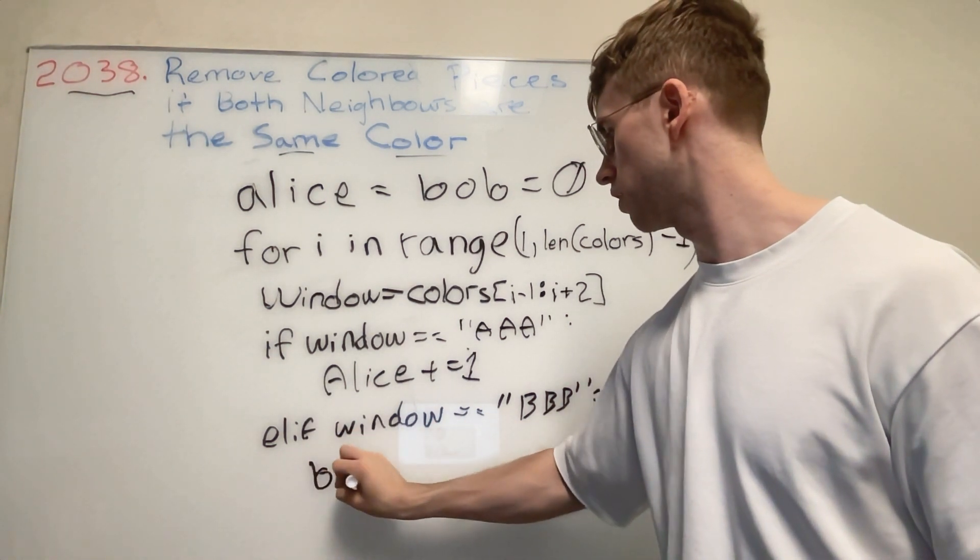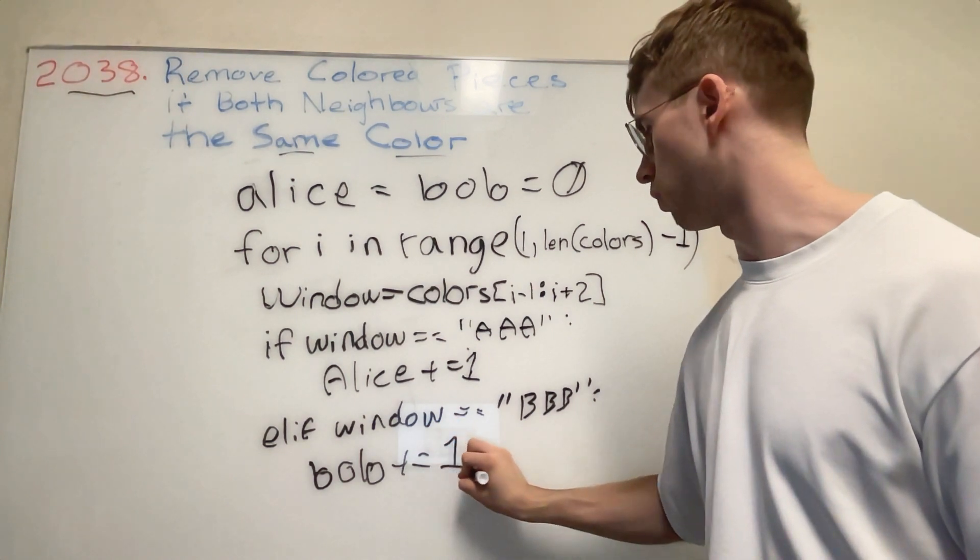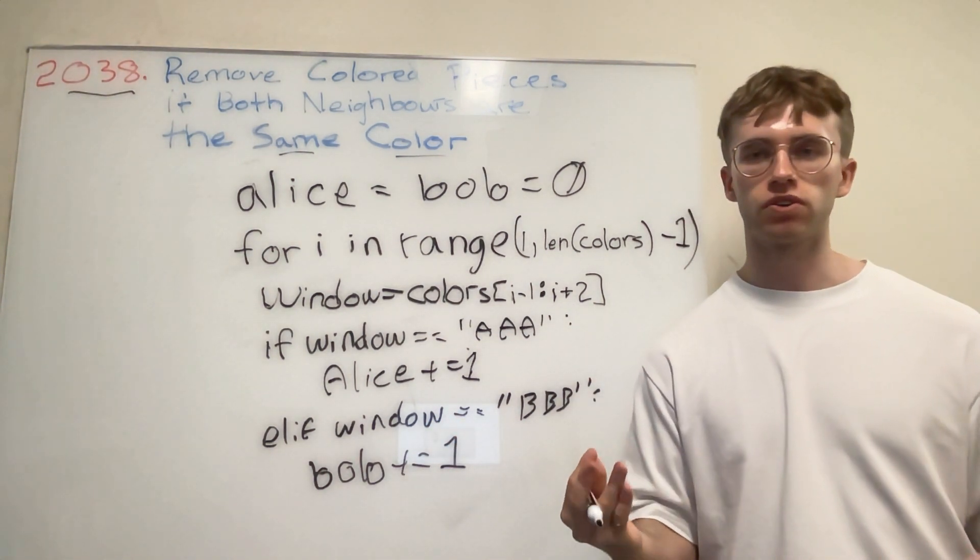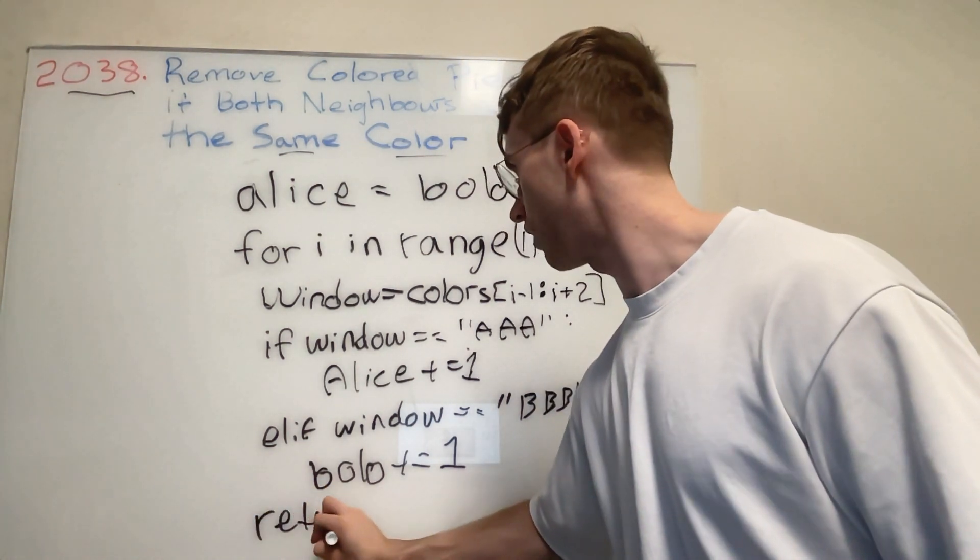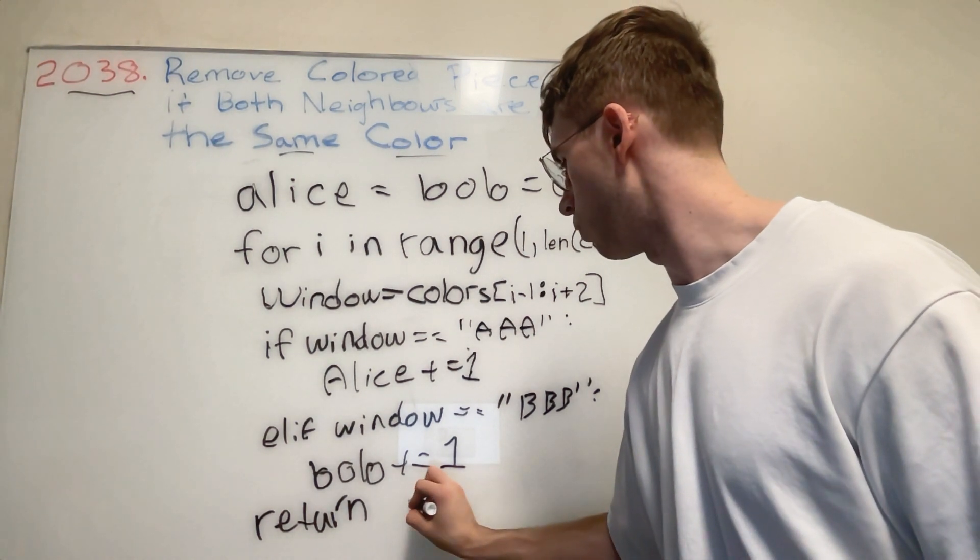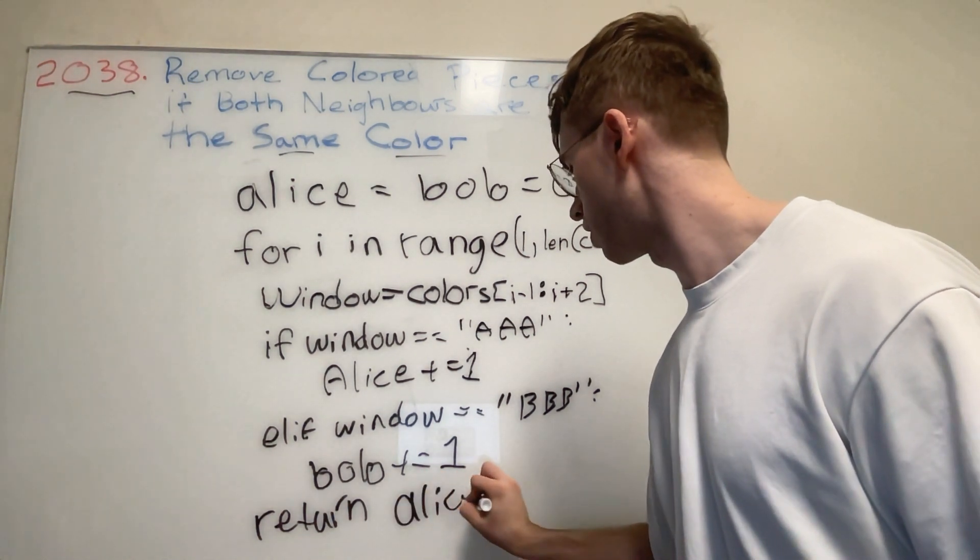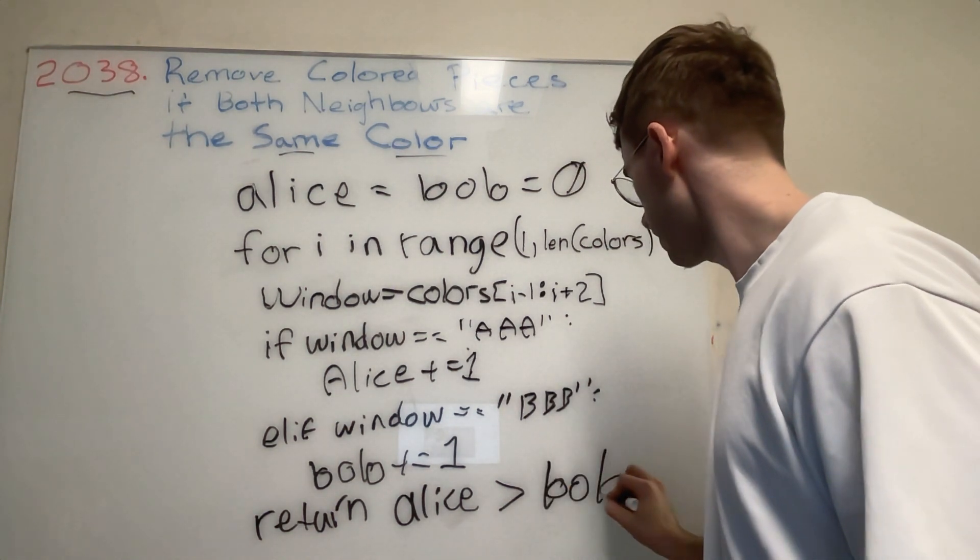Otherwise, basically same thing here: if our window is equal to BBB, Bob here is going to add one extra point. So finally, that's the main heart of the algorithm.